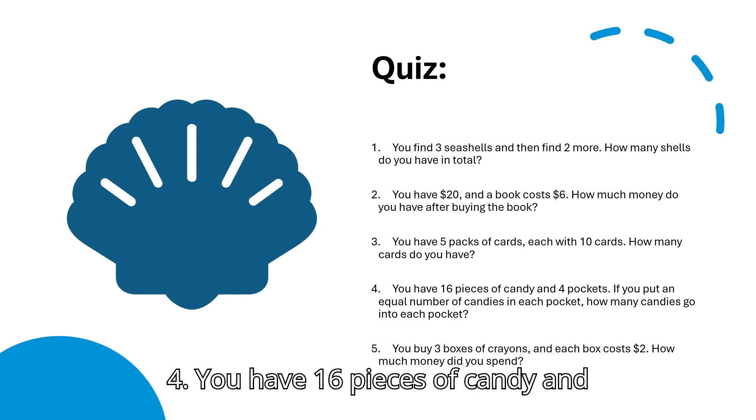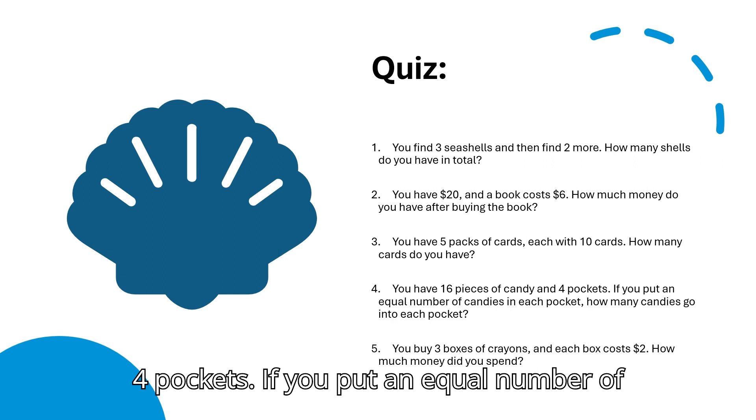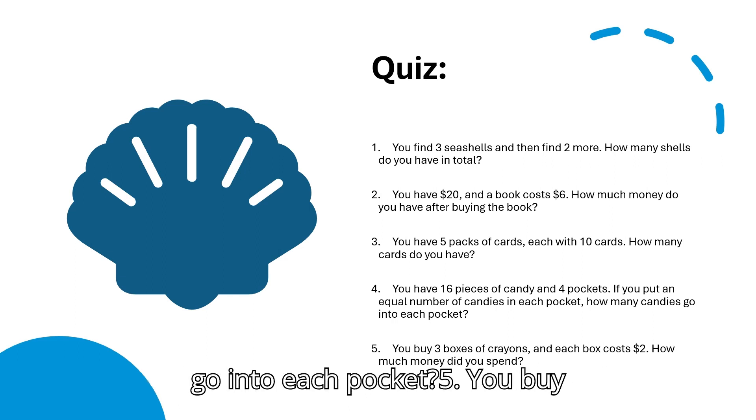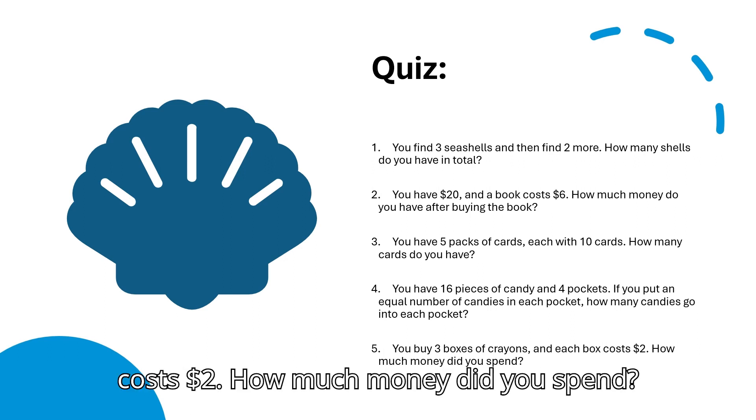Question 4: You have 16 pieces of candy and 4 pockets. If you put an equal number of candies in each pocket, how many candies go into each pocket? Question 5: You buy 3 boxes of crayons, and each box costs 2 dollars. How much money did you spend?